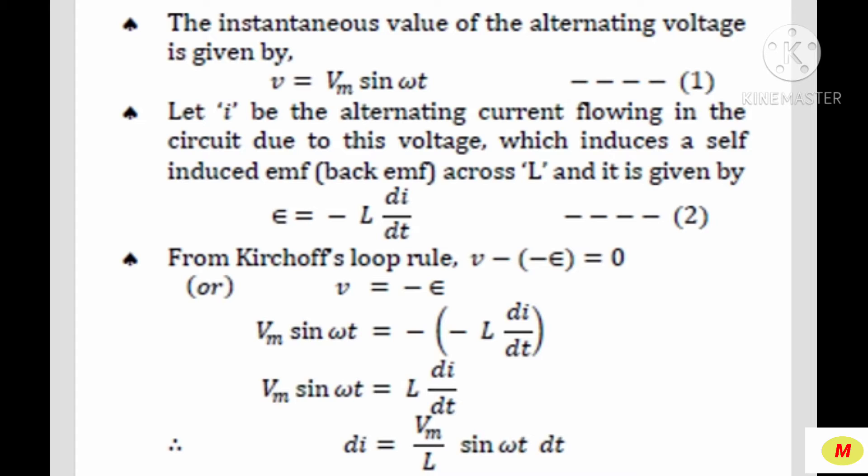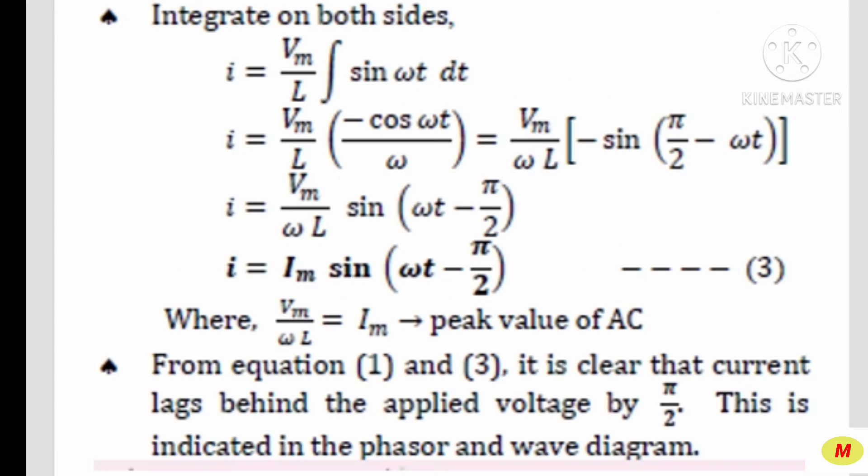We have studied Kirchhoff's loop rule in the 2nd lesson. From that rule, we can write V − (−ε) = 0, where V = −ε. From equations 1 and 2, this becomes Vm sin ωt = L(di/dt). Hence, di = (Vm/L) sin ωt · dt. By integrating both sides, we get i = (Vm/L) ∫sin ωt dt. When we integrate sin ωt, we get −cos ωt / ω.